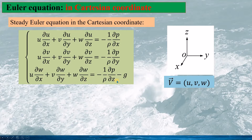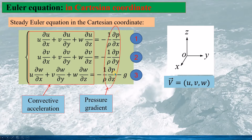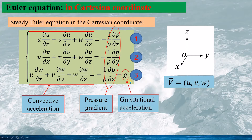In the Euler equation, we term each momentum equation as equation 1, equation 2, and equation 3. On the left-hand side of these equations are the convective accelerations along the x-axis, y-axis, and z-axis. On the right-hand side are the pressure gradient component and the gravitational acceleration. Because of the coordinate orientation, the gravitational force is in the opposite direction of z, hence the minus sign.